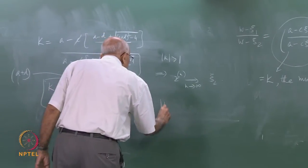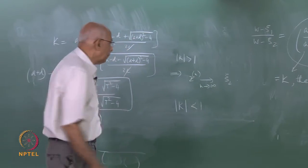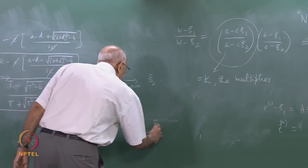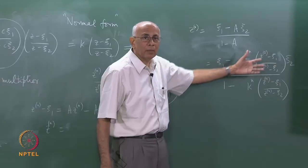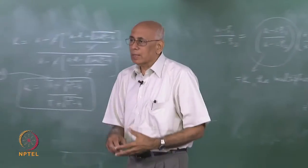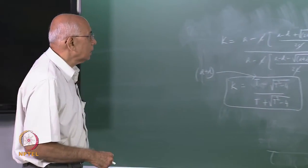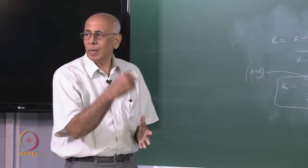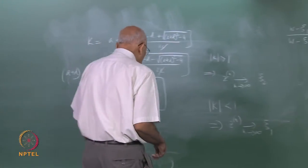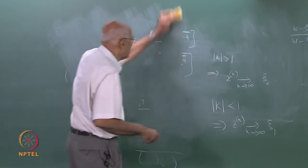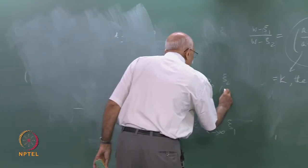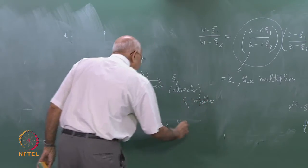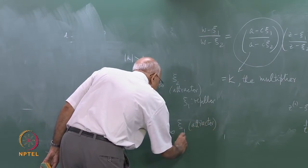What happens if mod k is less than one? The roles are reversed: z_n as n tends to positive infinity tends to z_i1, because the term with k^n gets smaller and smaller and vanishes in the limit. So now z_i1 becomes the attractor and z_i2 becomes the repeller.